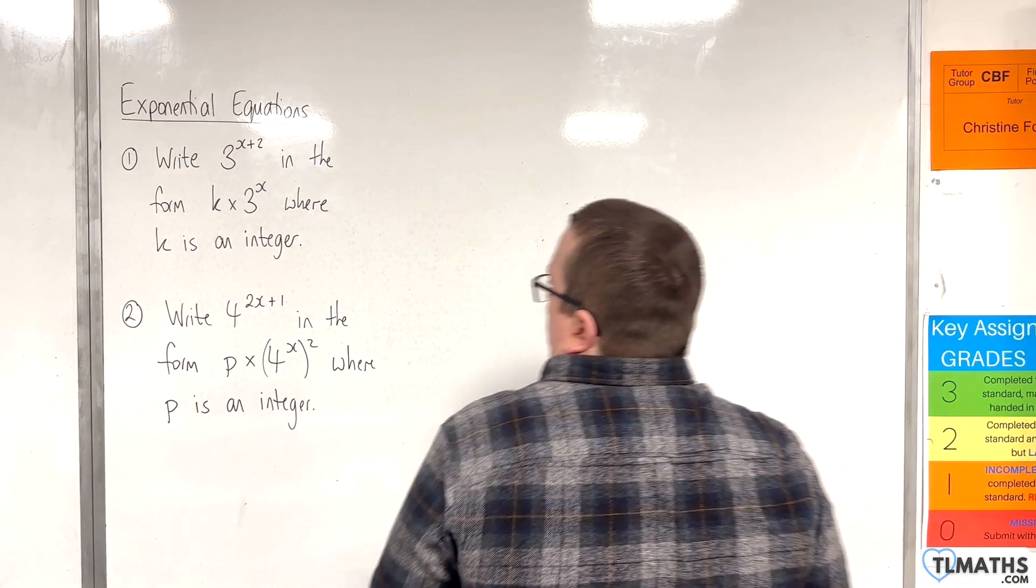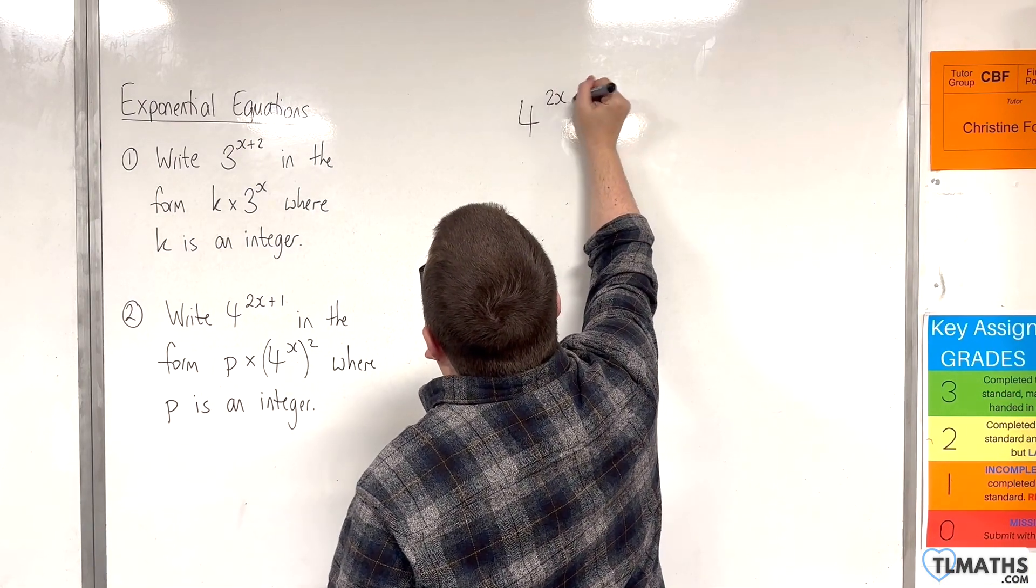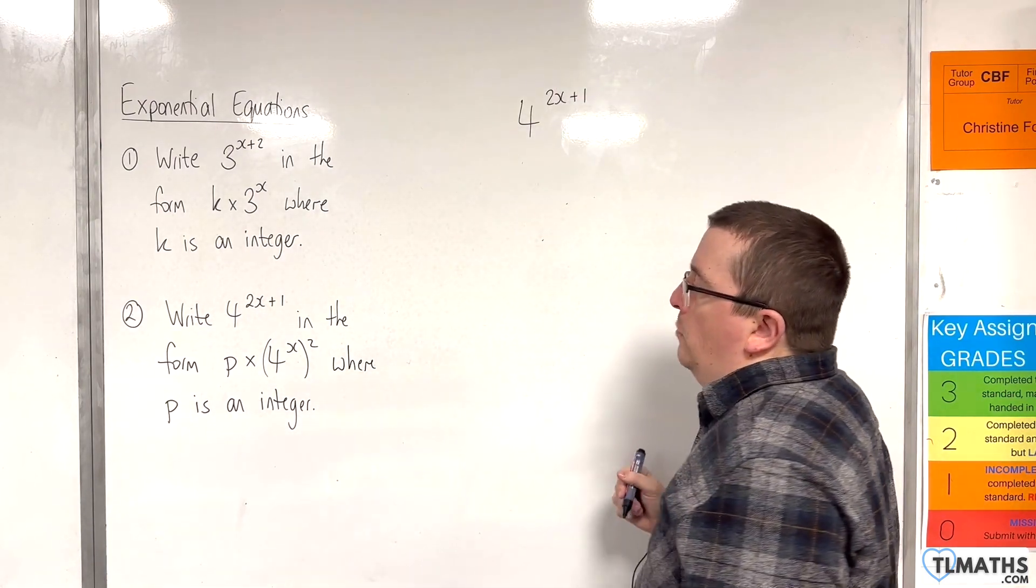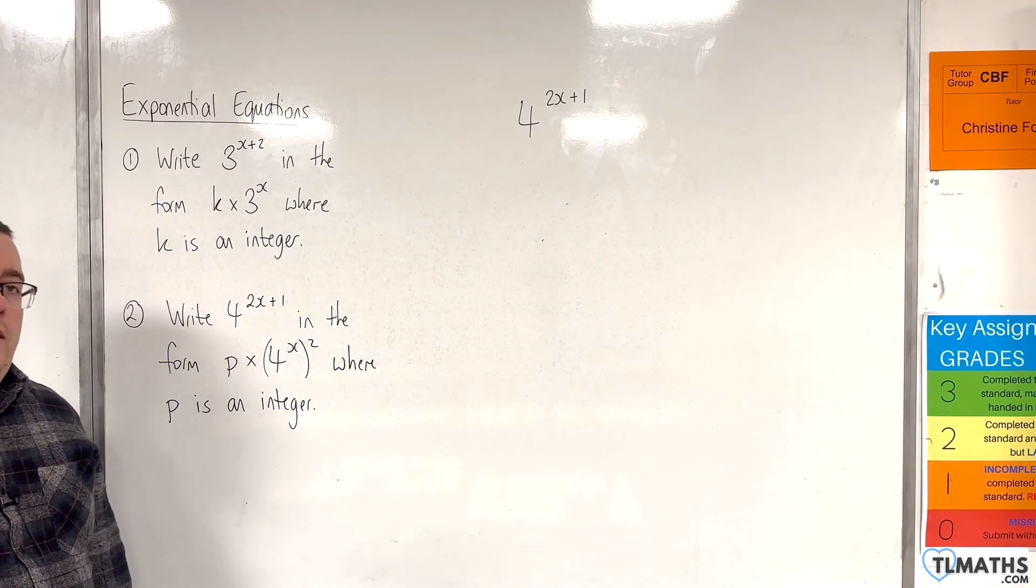Now for number 2, we need to write 4 to the 2x plus 1 in the form p times 4 to the x all squared, where p is an integer.